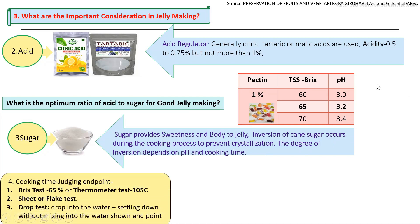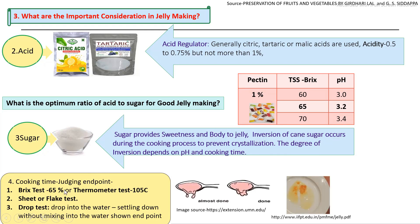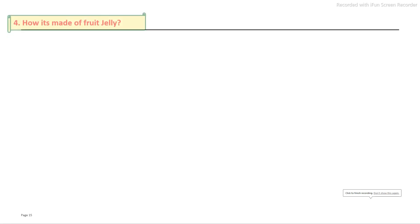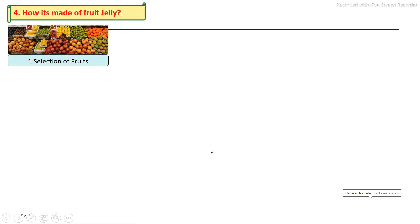The initial sugar level is measured from the fruit juice or pectin extract. Judging the endpoint is done using a Brix thermometer or by traditional methods. The general processing steps begin with proper selection of ripe fruits.